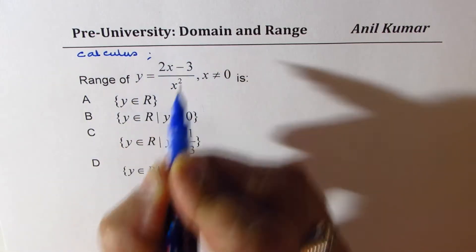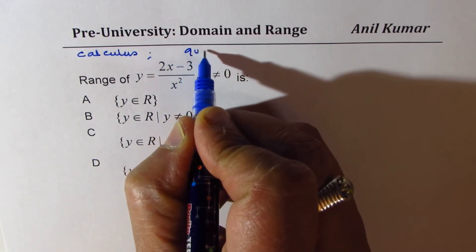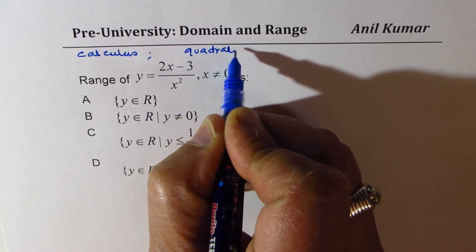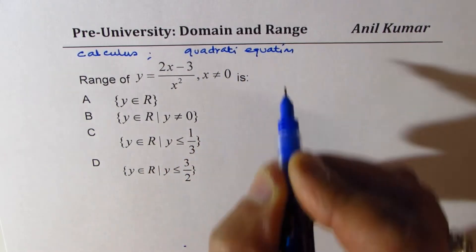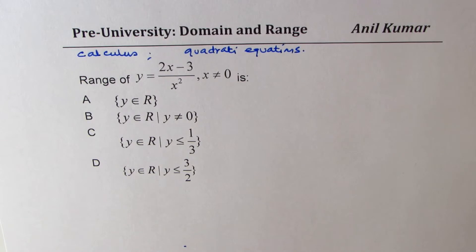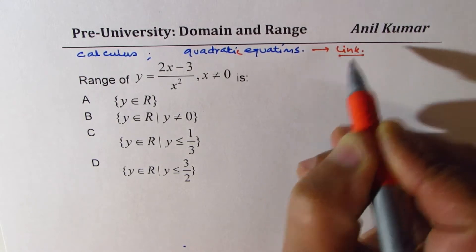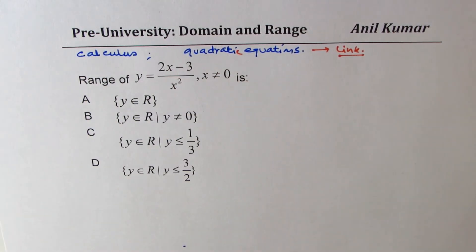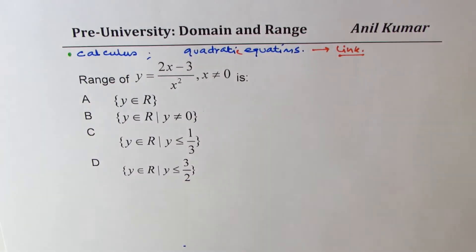I'll do calculus, but alternate method is quadratic equations. That particular solution, I will give you a link for that. At present, I'm going to use the derivatives to find absolute maximum. So, we'll use calculus at present.